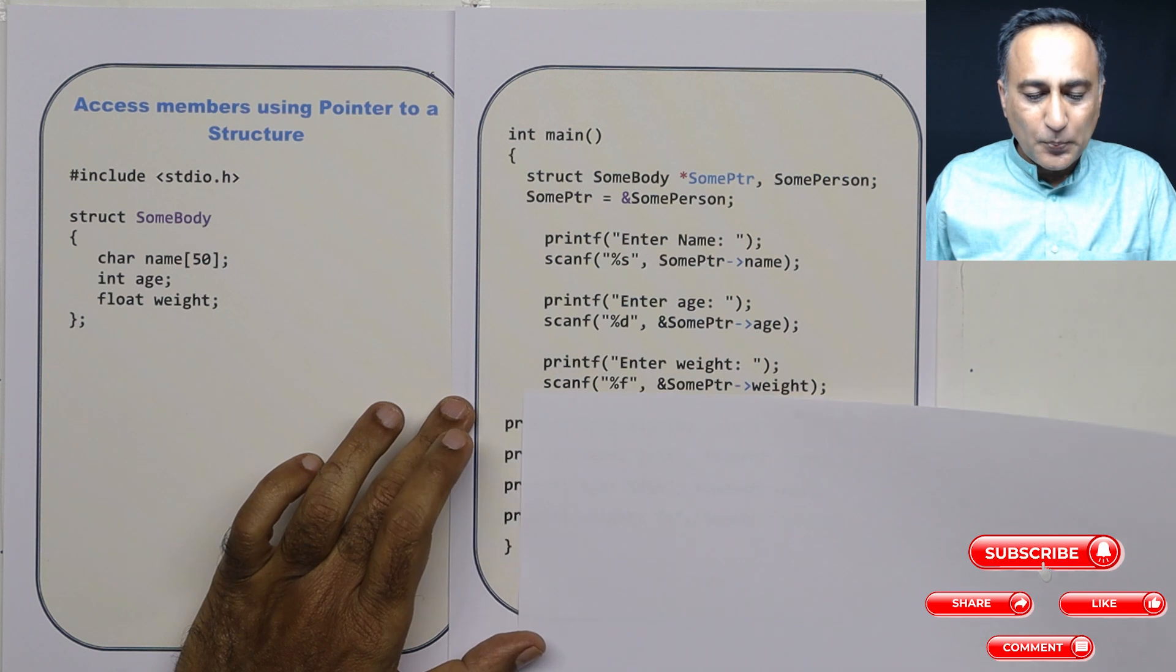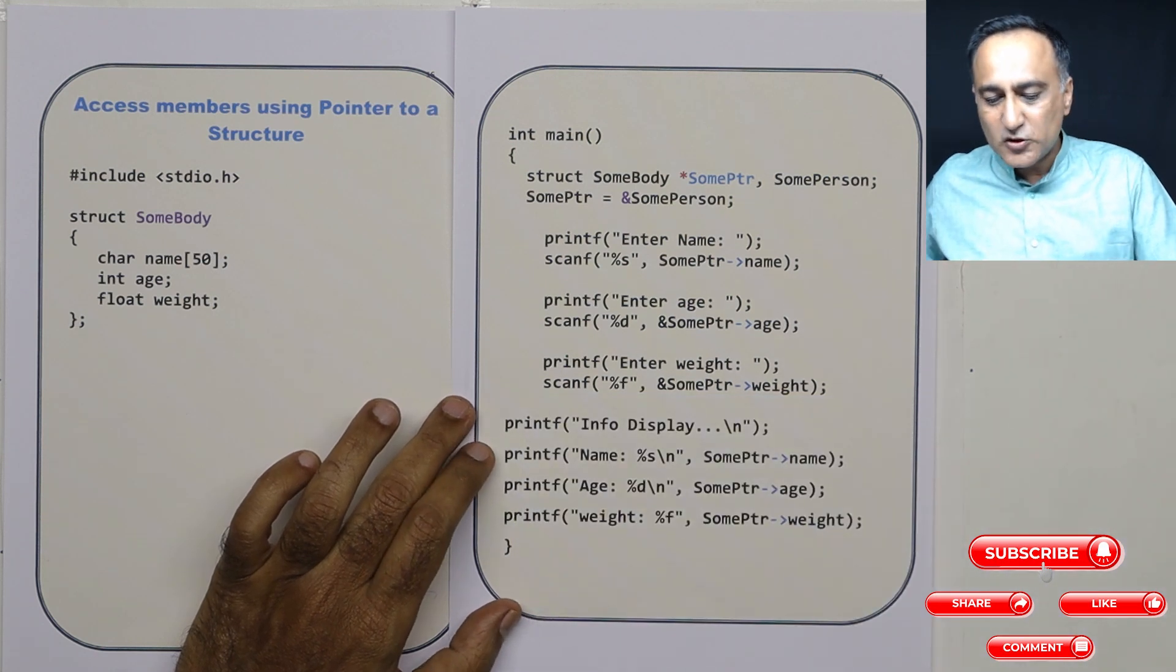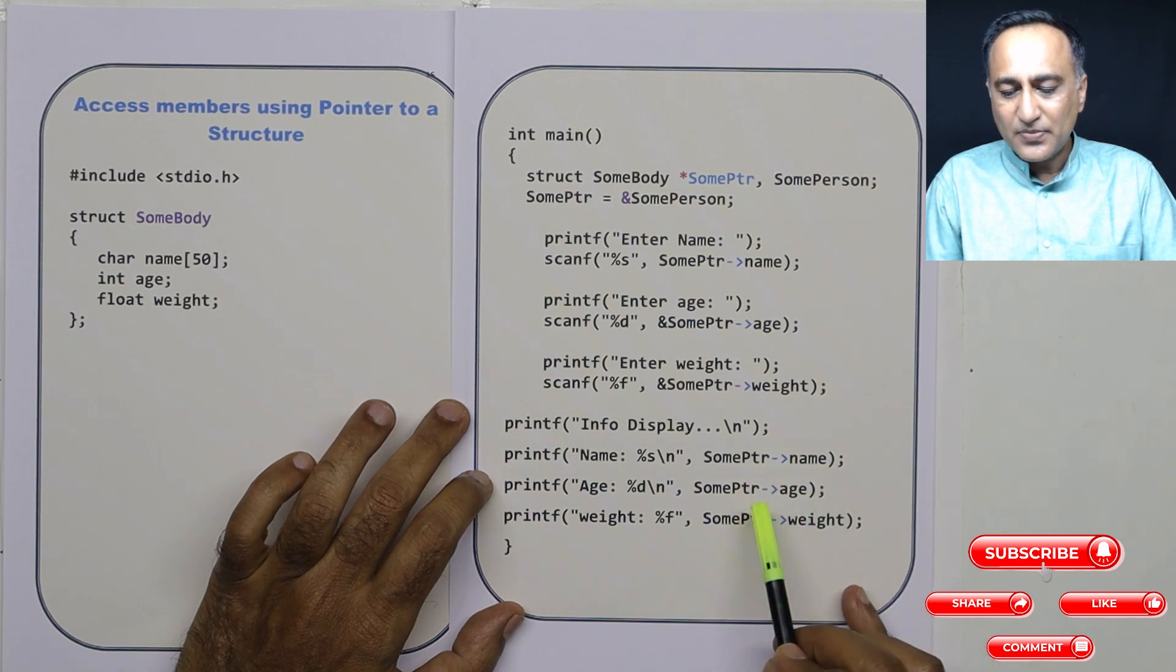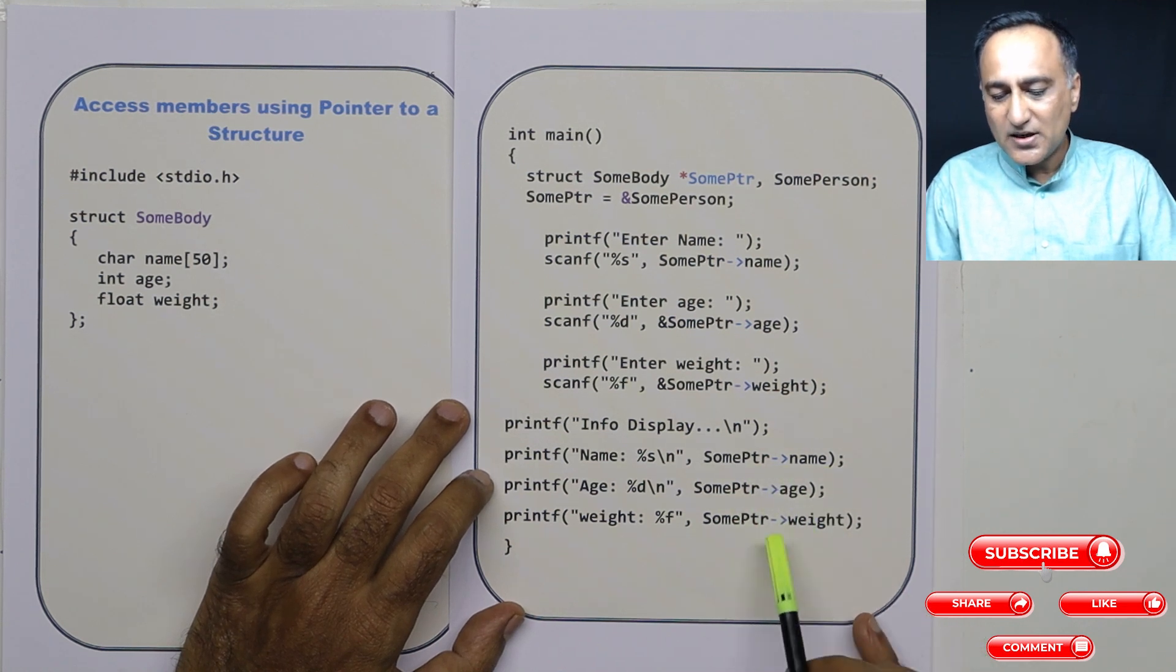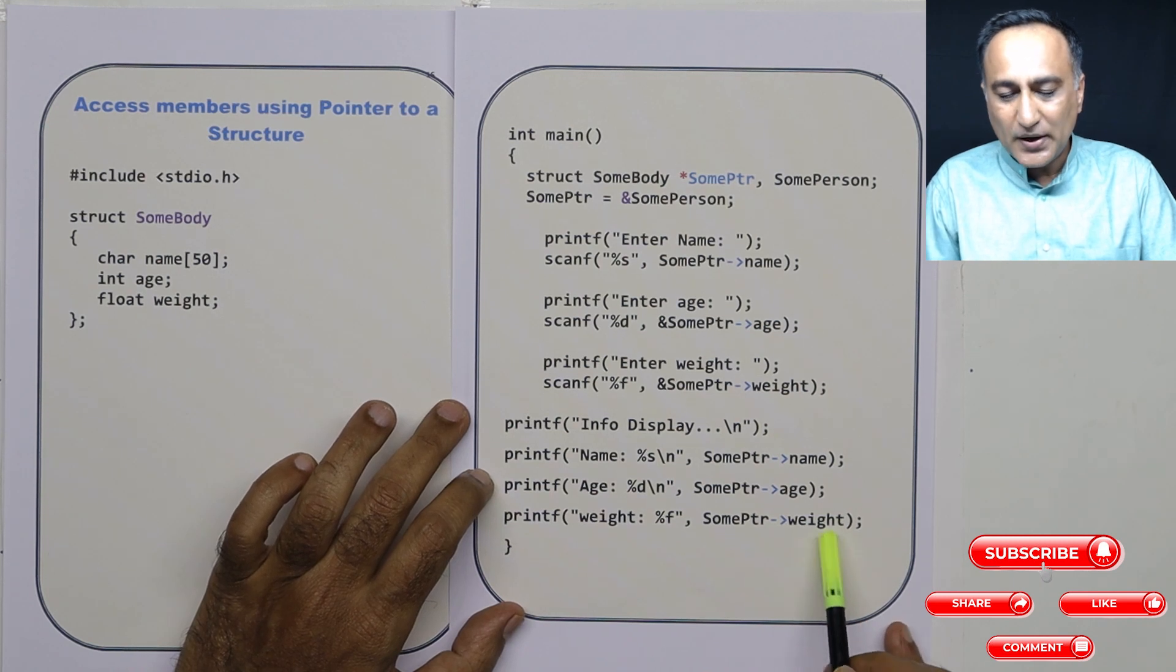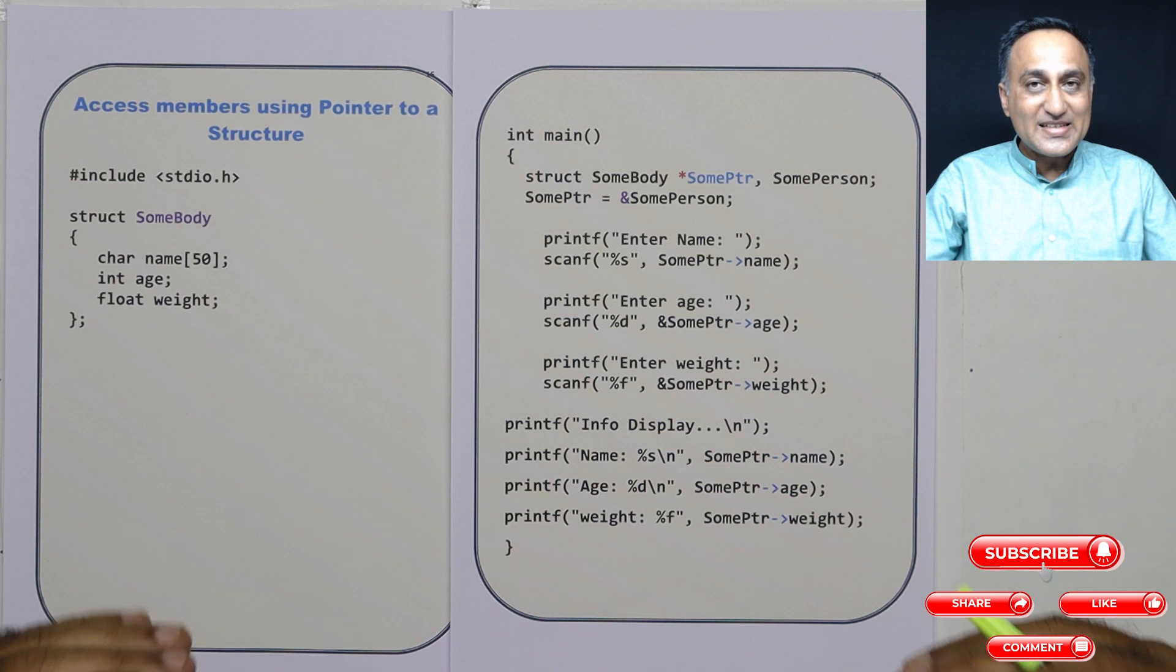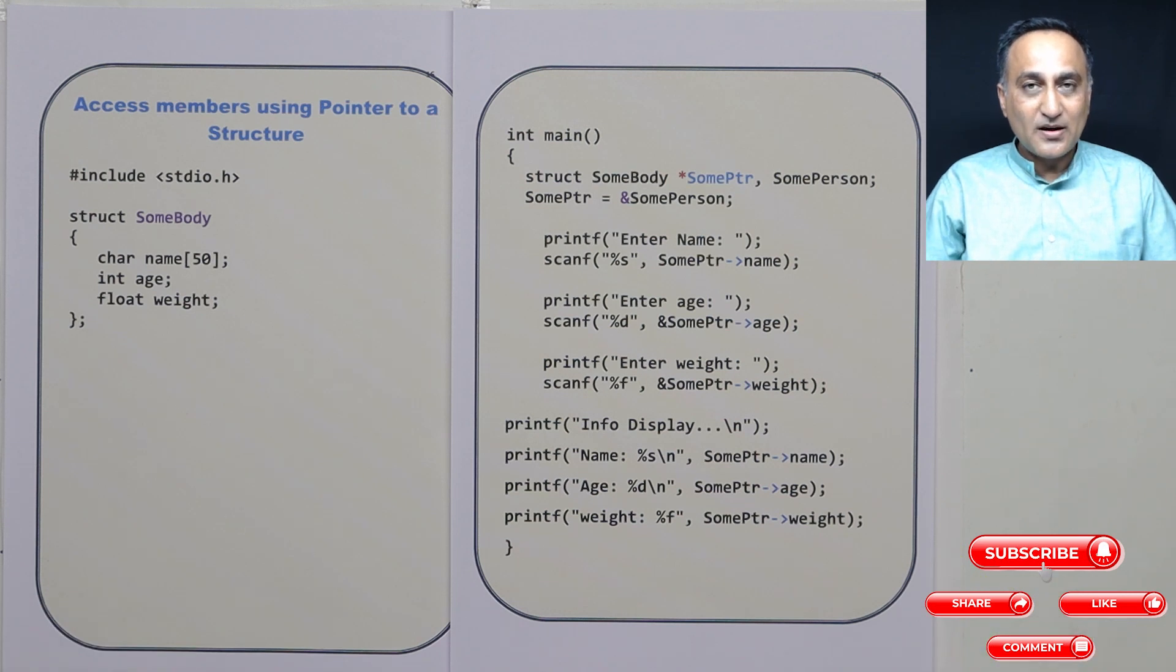Now if I have to print all these details, that's also quite simple. So I have to simply say some pointer arrow name, some pointer arrow age, and some pointer arrow weight.